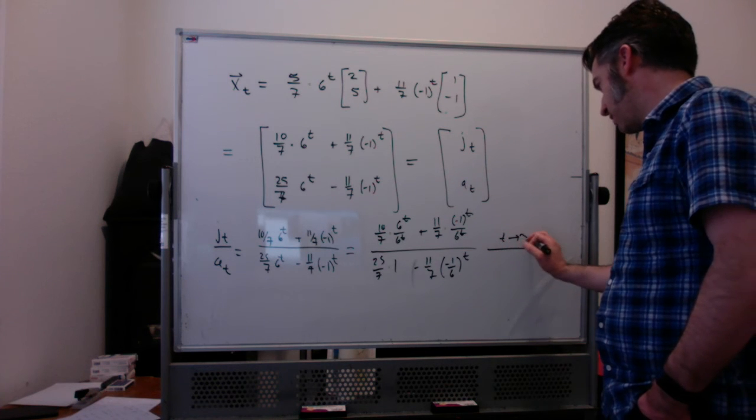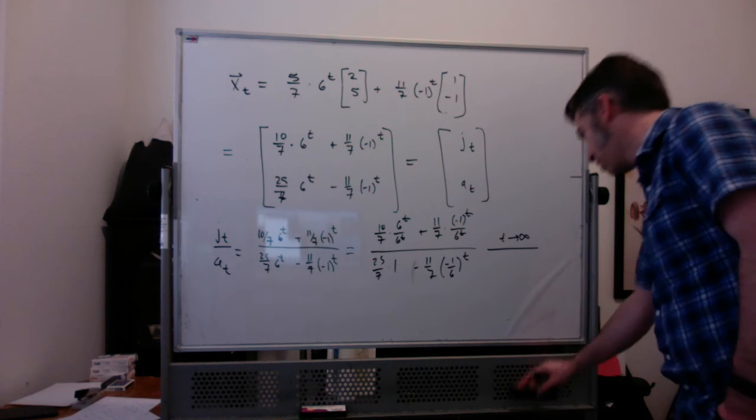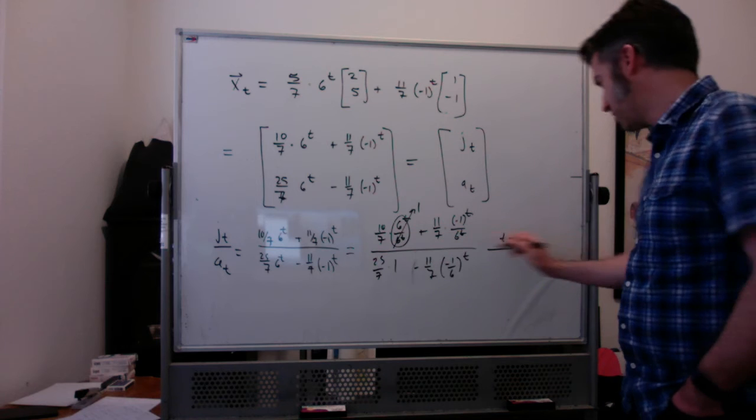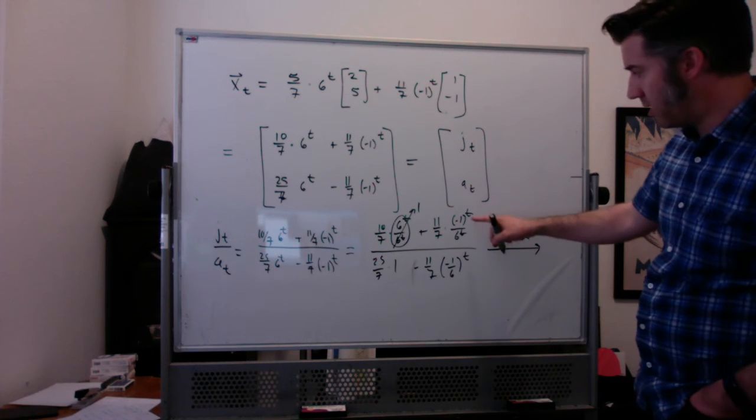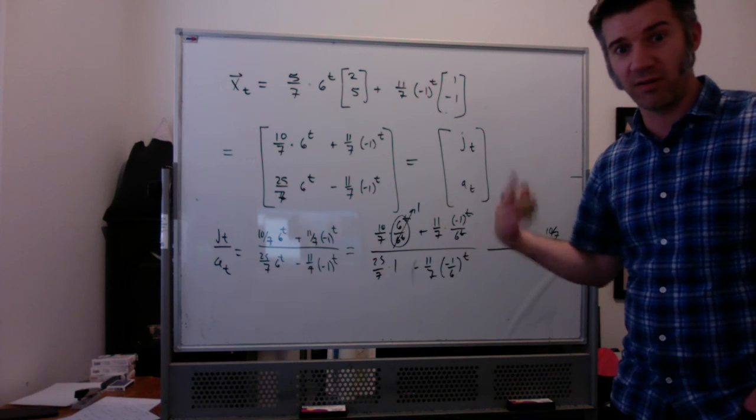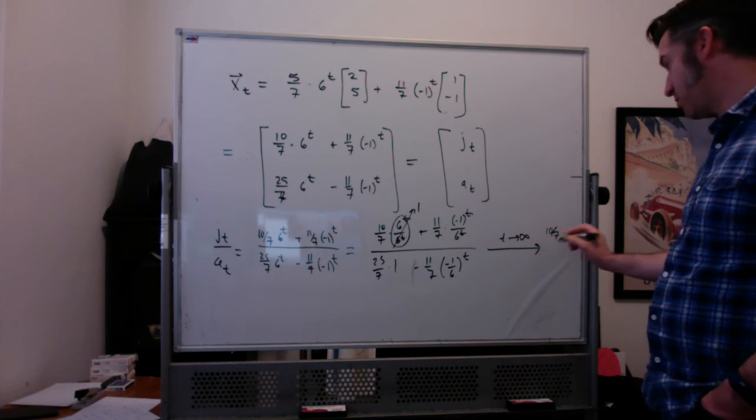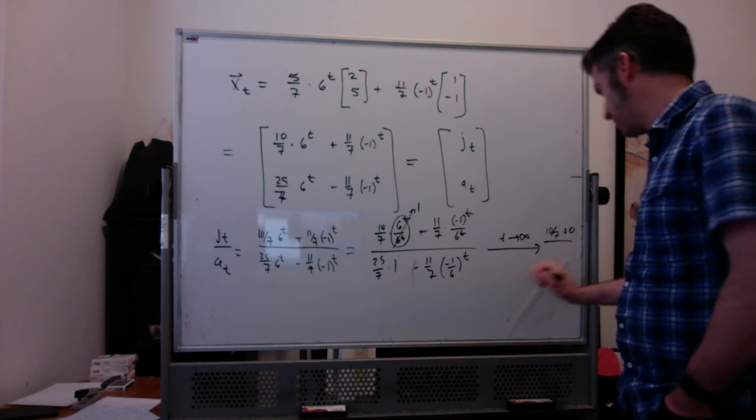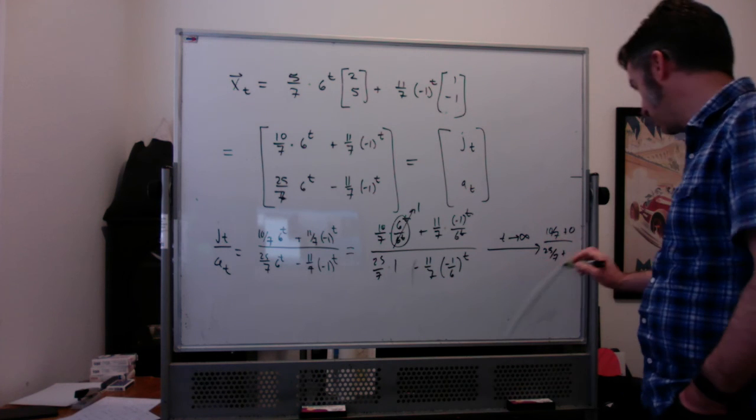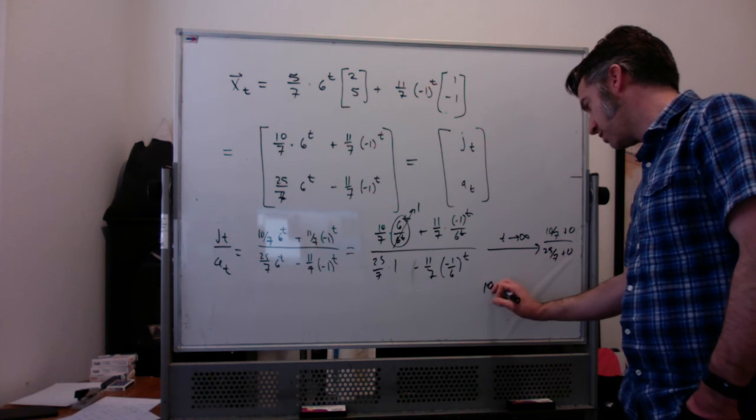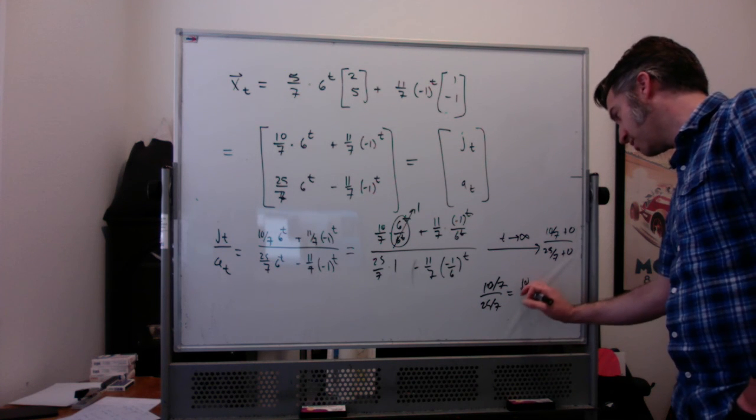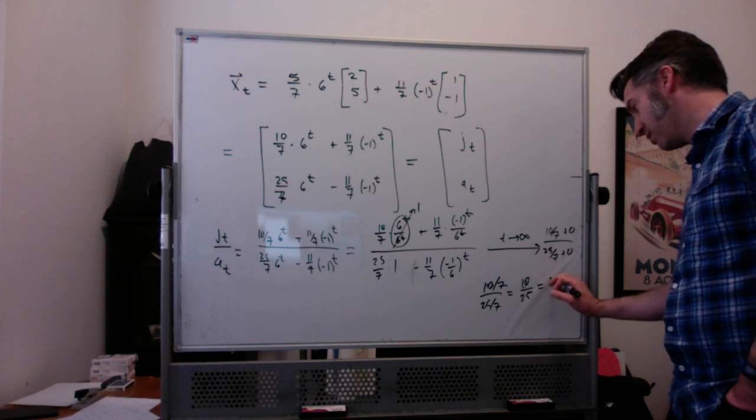So as t goes to infinity, or if we take the limit as t goes to infinity, look what happens. 6 to the t over 6 to the t is just 1. So you get 10 sevenths times 1. And negative 1 to the t over 6 to the t goes to 0. As t gets bigger and bigger, that gets smaller and smaller. So that's 10 sevenths plus 0 over 25 sevenths plus 0 as t goes to infinity. So we get 10 sevenths to 25 sevenths, or multiplying top and bottom by 7, 10 to 25, dividing top and bottom by 5, 2 to 5.